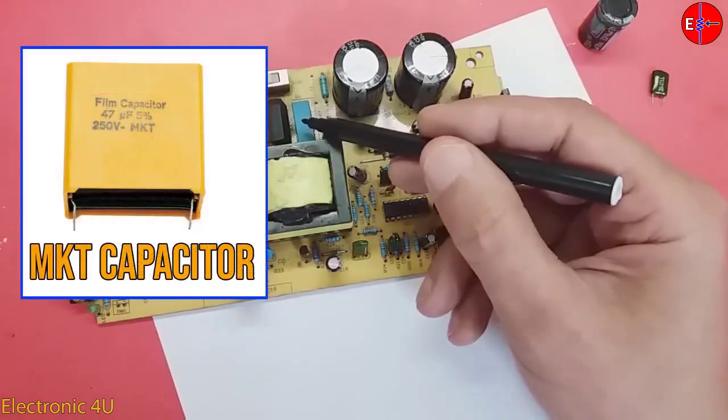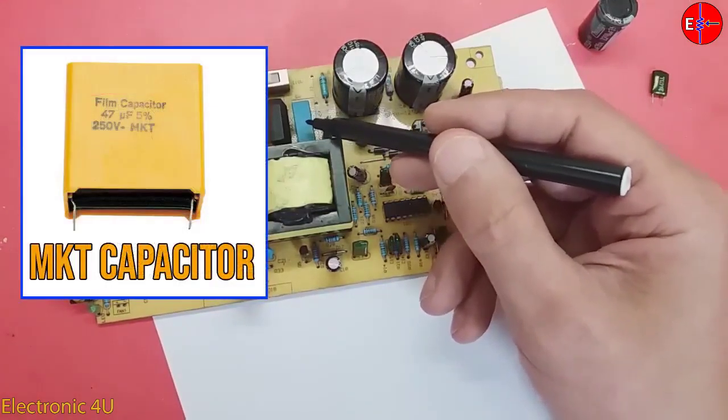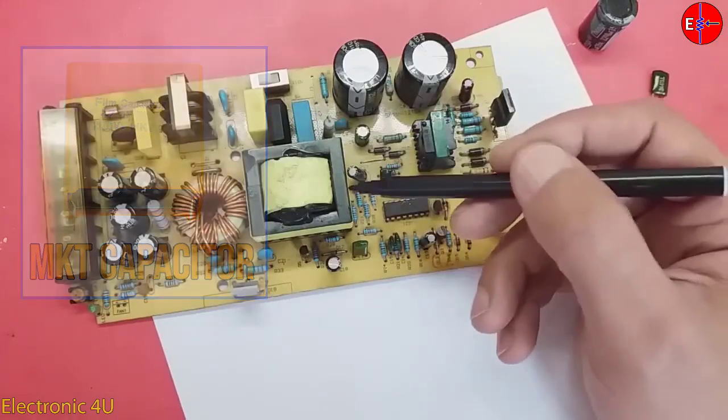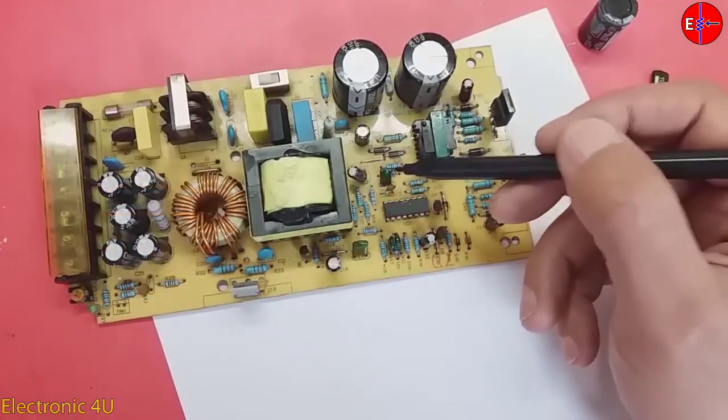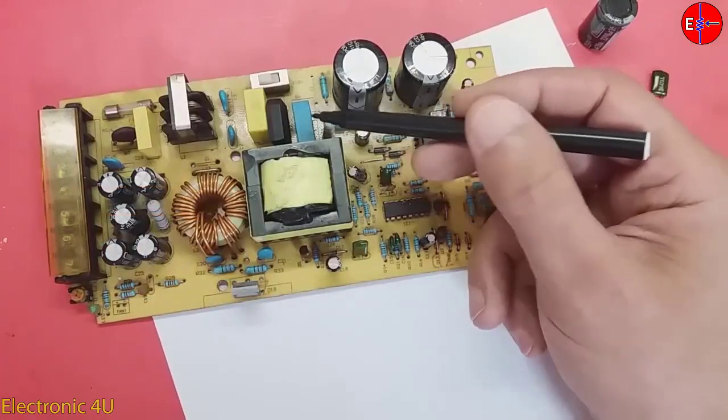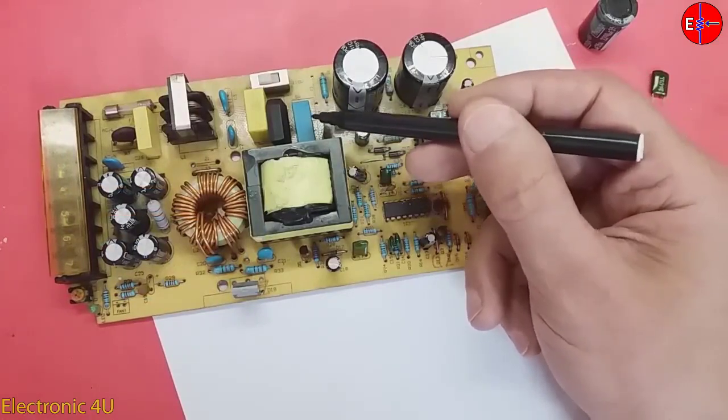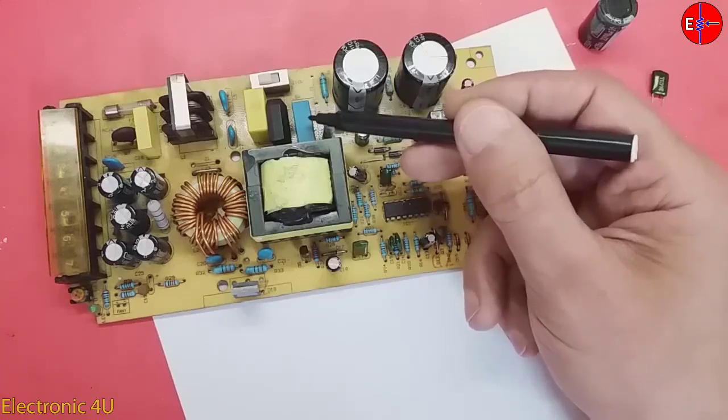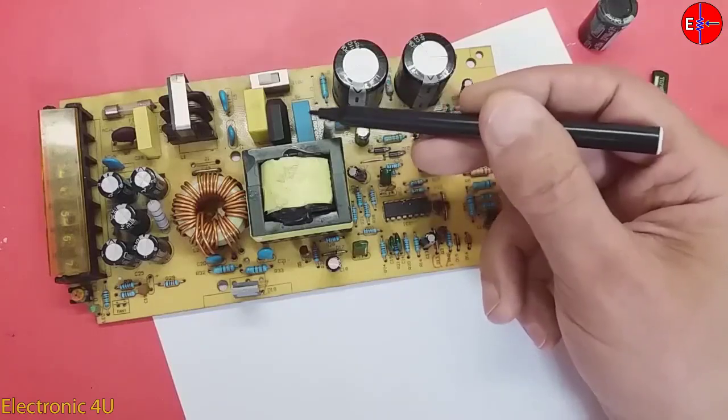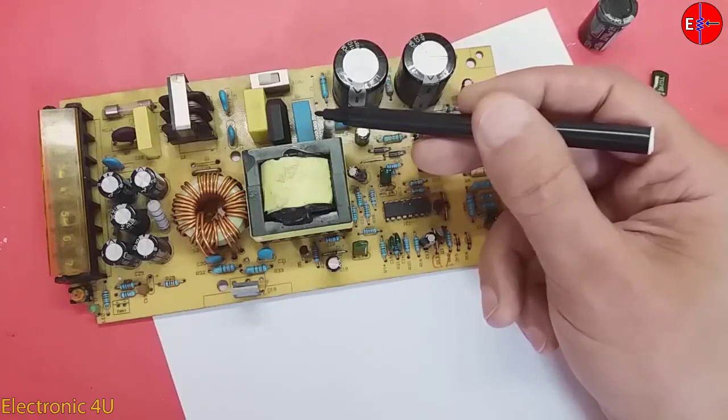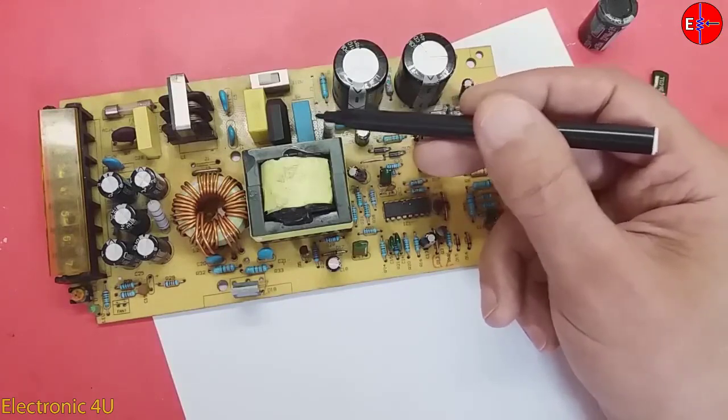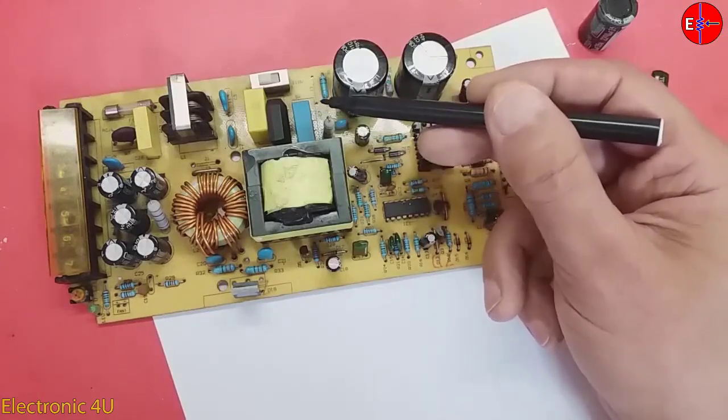MKT capacitors often tolerate higher frequencies. For this reason, in the type of switching power supply, they use the MKT capacitor which is placed in series with the transformer. Maybe in some circuit, polyester capacitors are used. The MKT capacitor can withstand high frequency, but it does not have a large capacity.